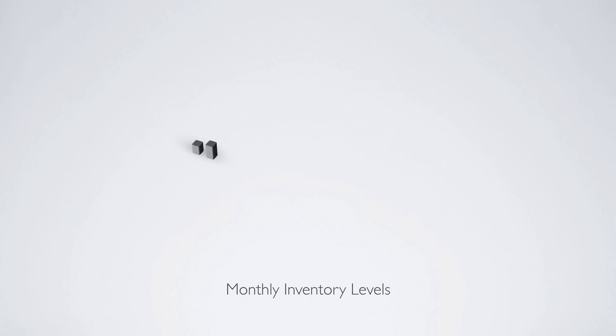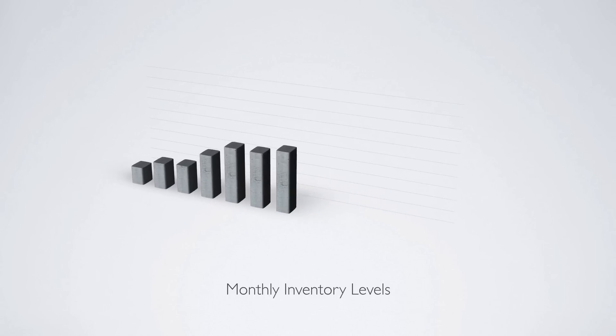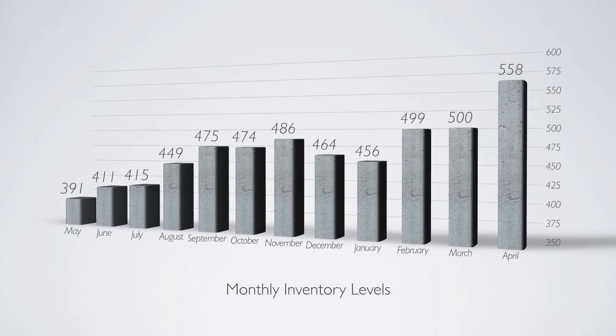Now let's check out our inventory levels. As you can see on the screen right now, last month we had 558 homes on the market. This was a 10% increase from last month when we had only 500 homes. You can clearly see that every month this year we've managed to increase our inventory.